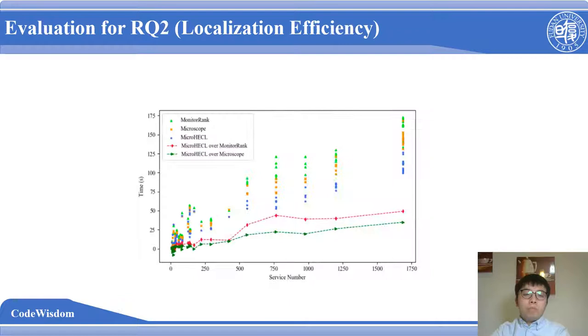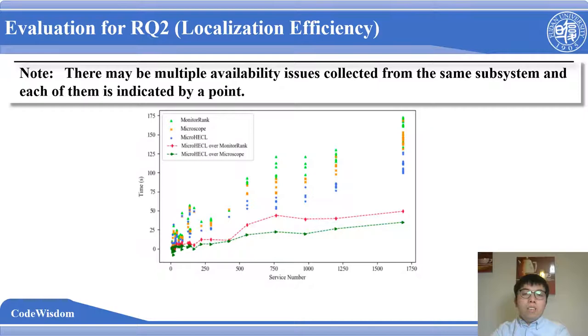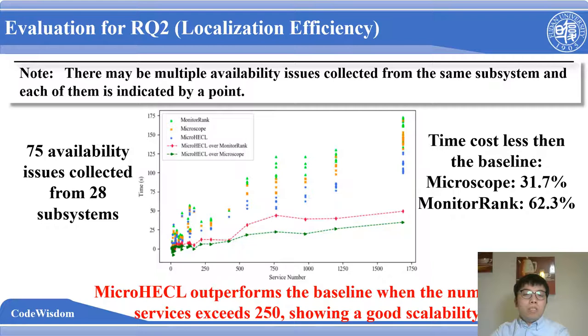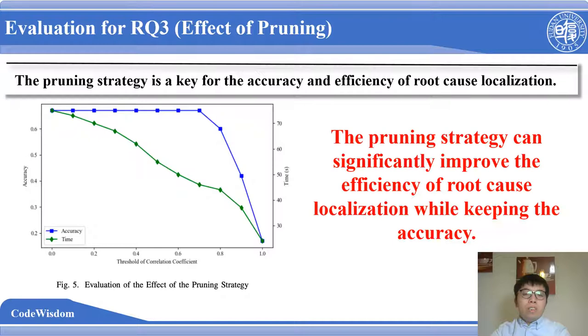For the localization efficiency, we find the time cost of MicroHackle is much less than the baseline methods. MicroHackle outperforms the baseline when the number of services exceeds 250. It shows good scalability. Finally, the pruning strategy. We can see that the pruning strategy can significantly improve the efficiency of root cause localization while keeping the accuracy. We also find that, as shown in the picture, we need to find a trade-off between the accuracy and the time cost.